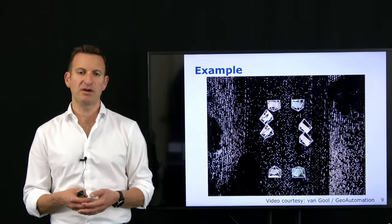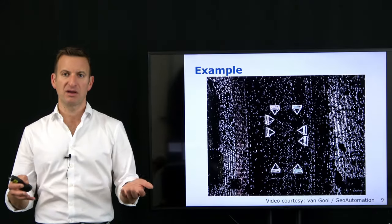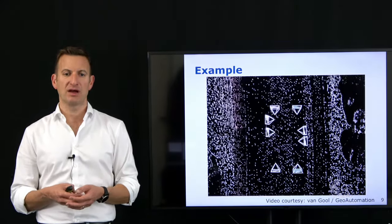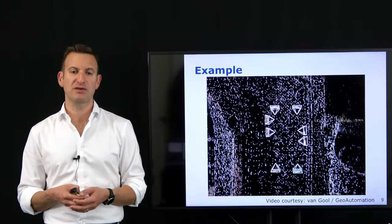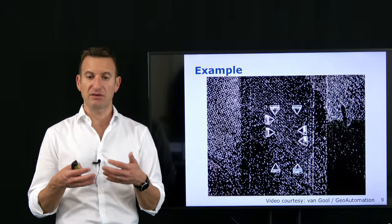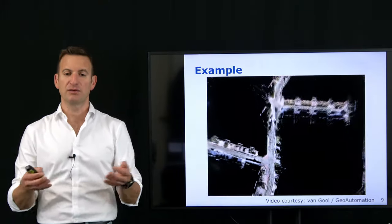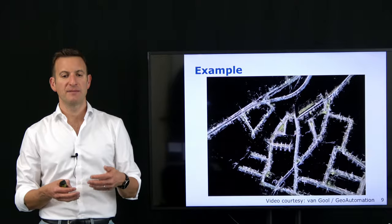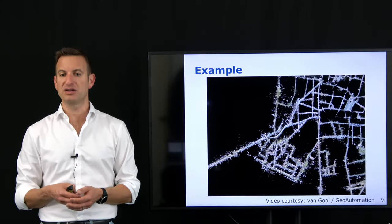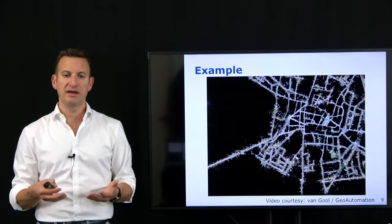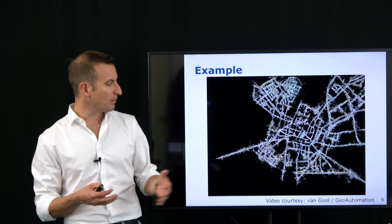By moving through the environment, you perceive the environment at different locations and record those images. You extract features from those images, estimate the location of your vehicle with respect to those features — relative orientation plays an important role here — and then put those things together into a very large least squares problem that we want to solve. This is the bundle adjustment problem.